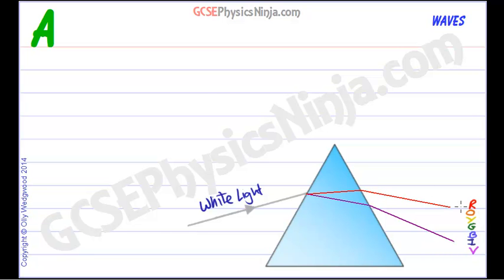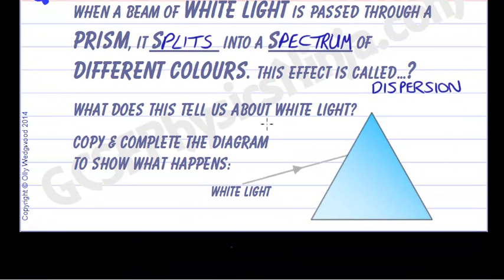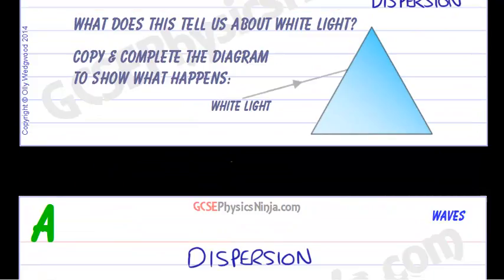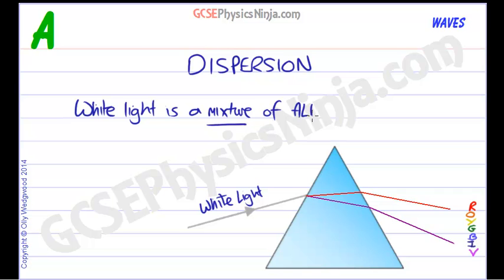This effect is called dispersion. So what does it tell us about the nature of white light? What does it tell us about white light?